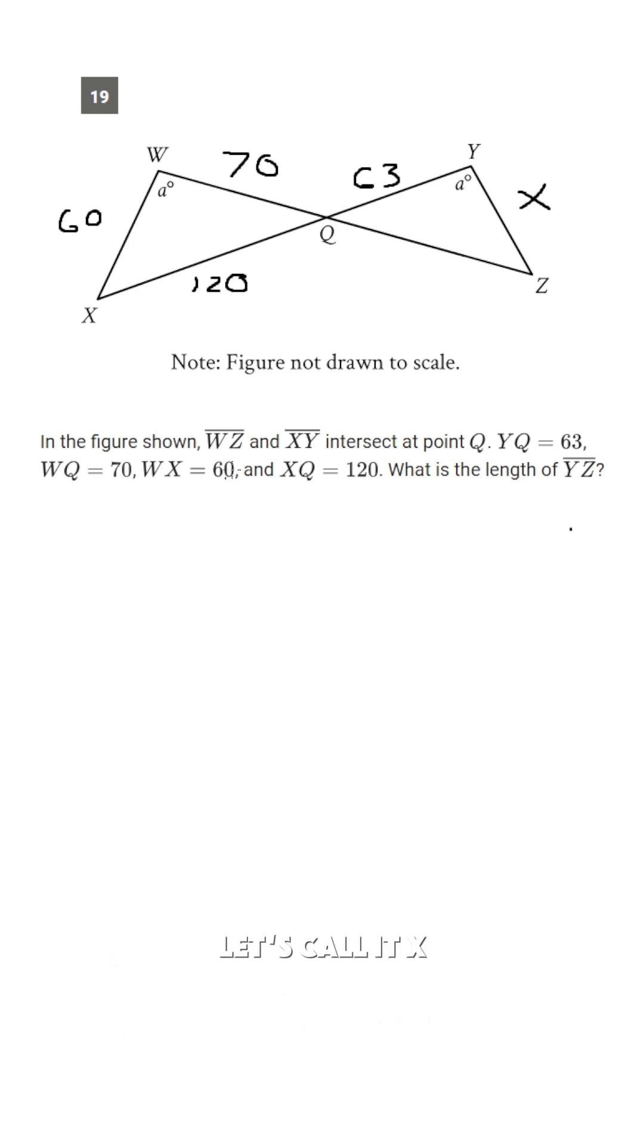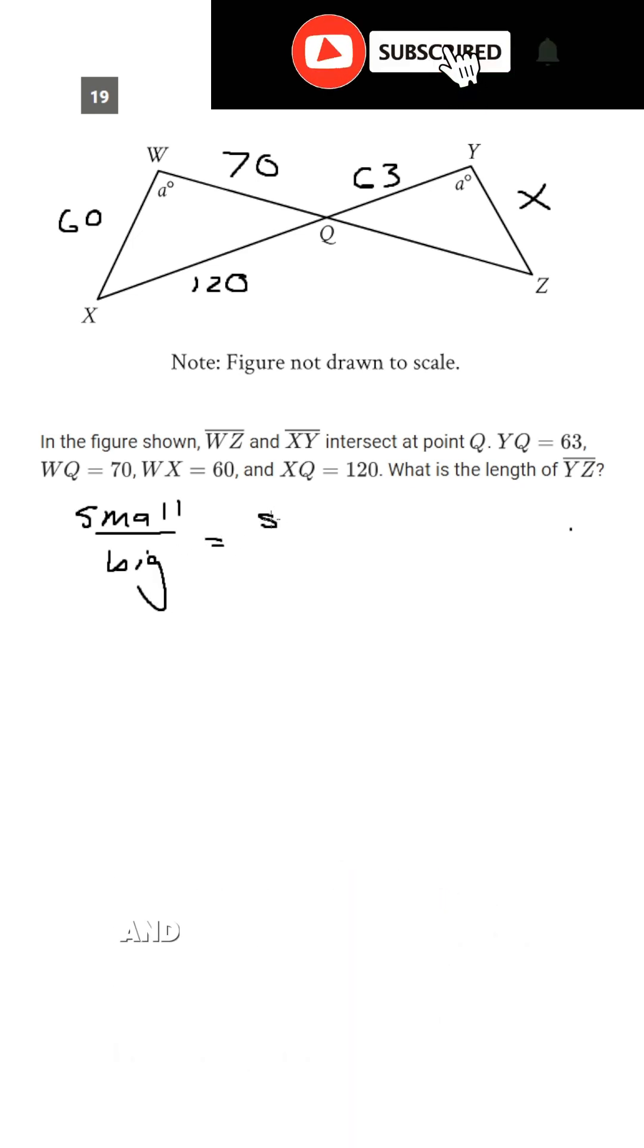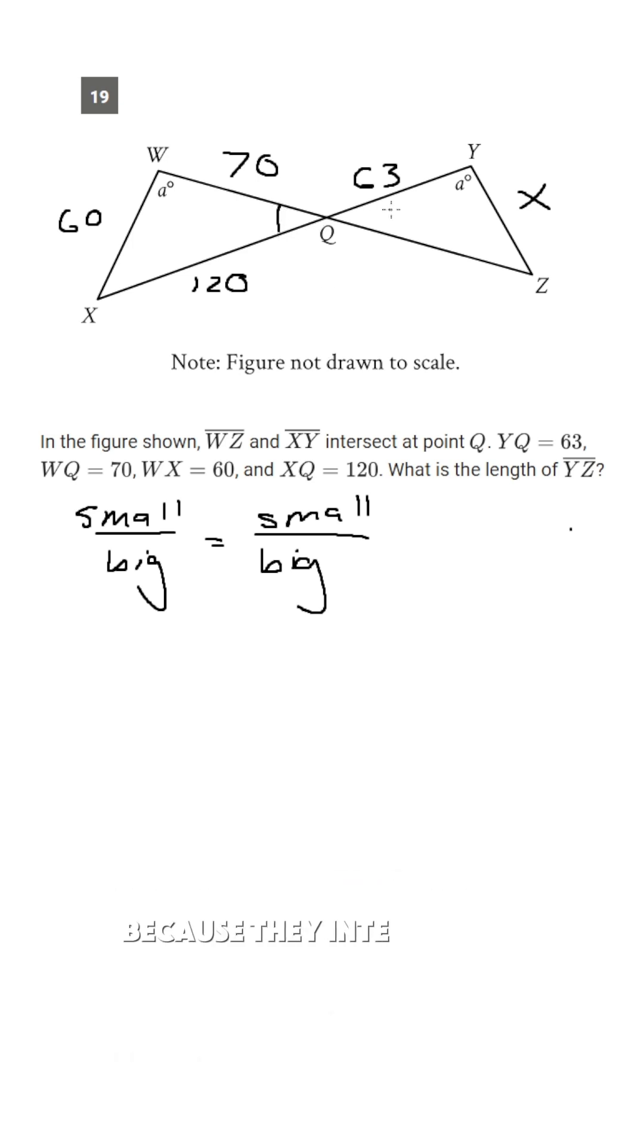And now to find the length of YZ, let's call it x. We need to use small over big equals small over big. And how do we know that we need to use that? Well, these are two similar triangles because they intersect at this point. This will create two vertical angles, and therefore we have two angles in these triangles that are similar.